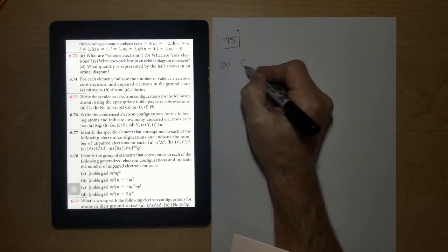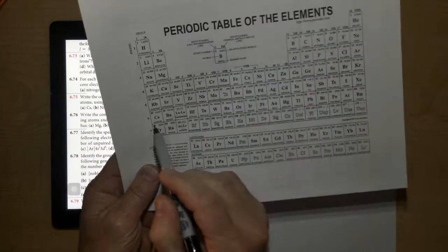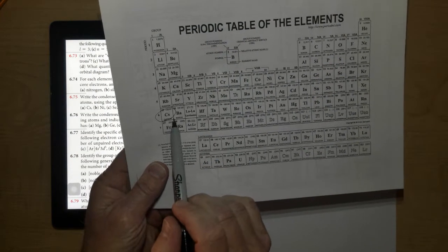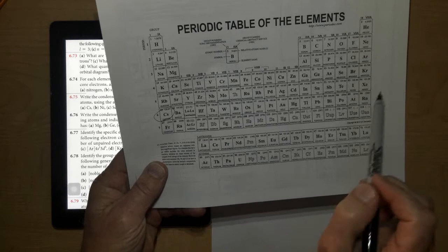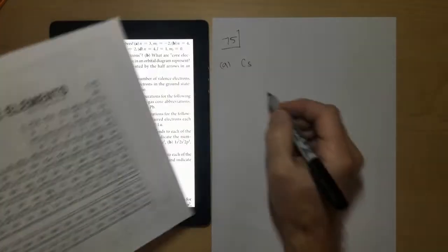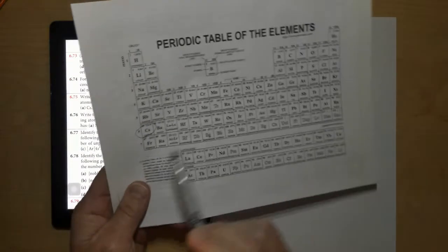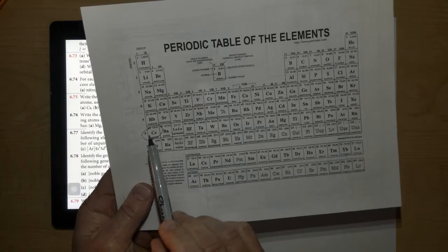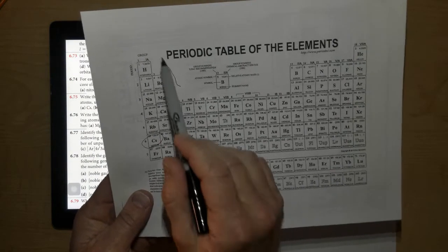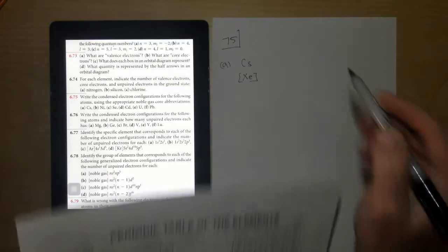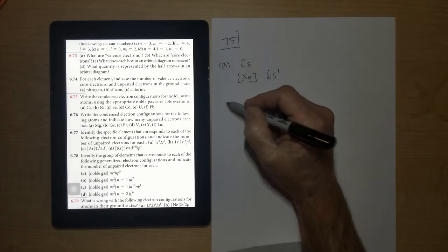So for letter A, it's the element cesium. Find cesium on the periodic table. Look backwards to the nearest noble gas. The nearest noble gas is xenon. So xenon would be written as Xe. Put it in brackets. And then you'd go to the next level, which would be 6. And you'd start with the 6. And remember, this is the S area of the periodic table. So it would be 6S1. And that would be cesium.